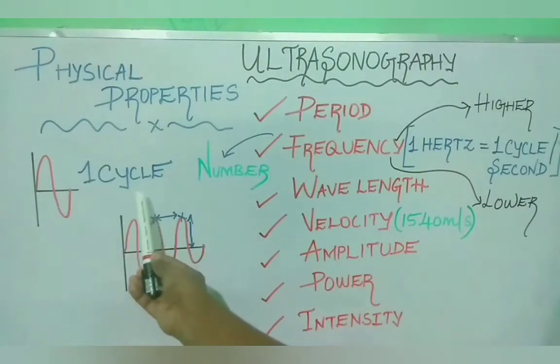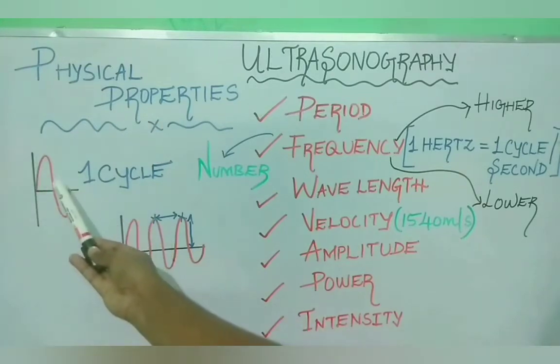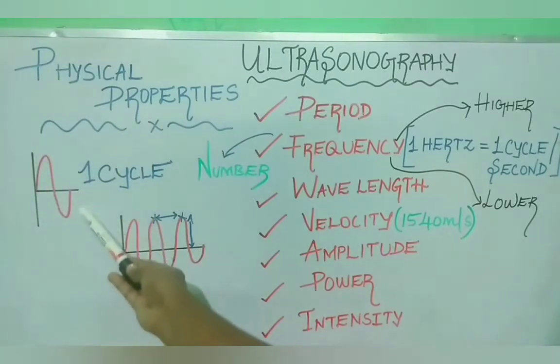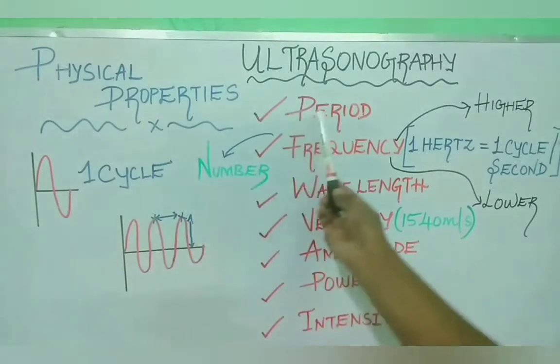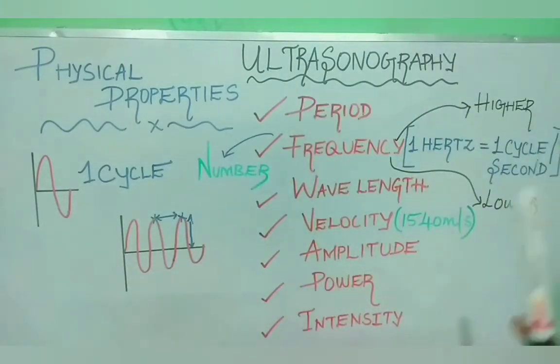One cycle comprises of one positive deflection and one negative deflection. This is one cycle. Period is the length of time to complete one cycle.